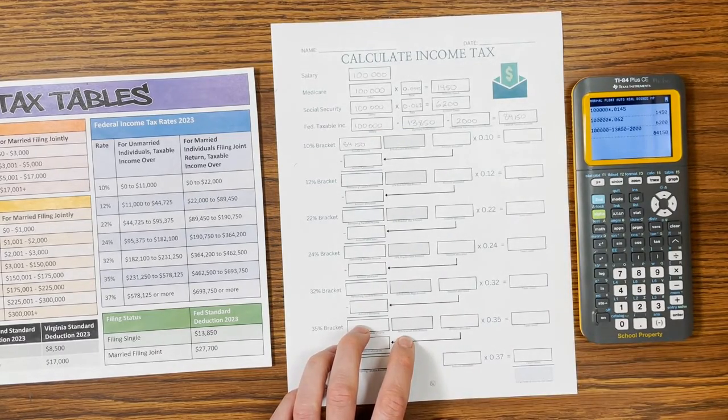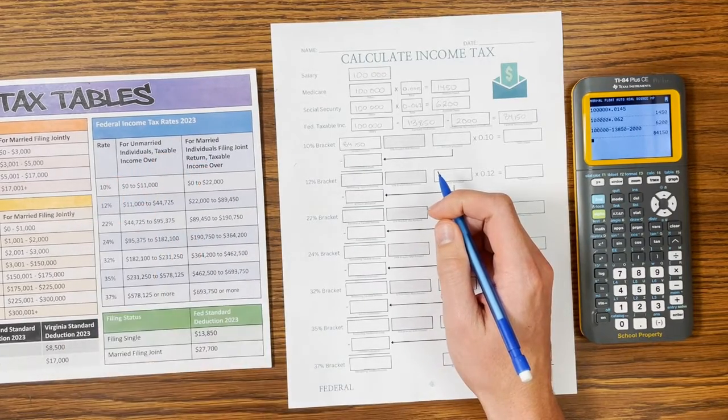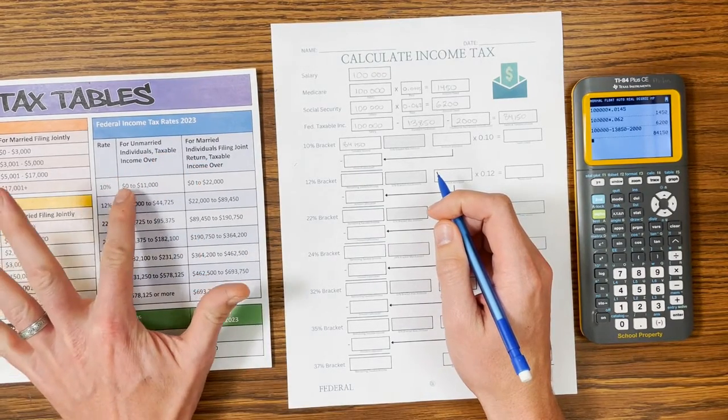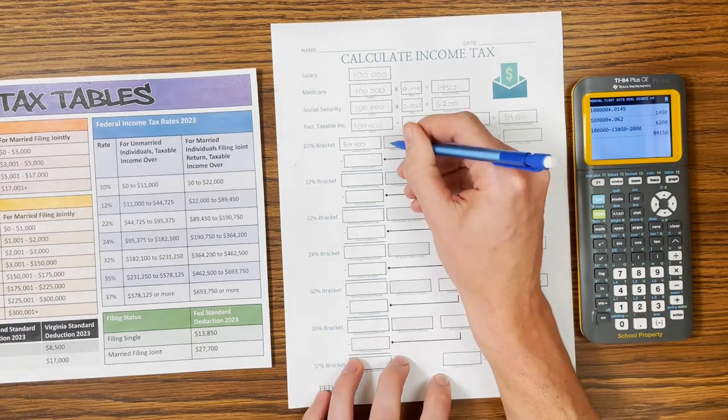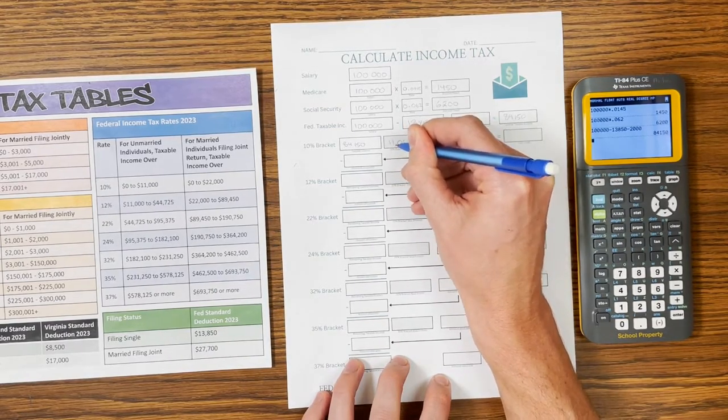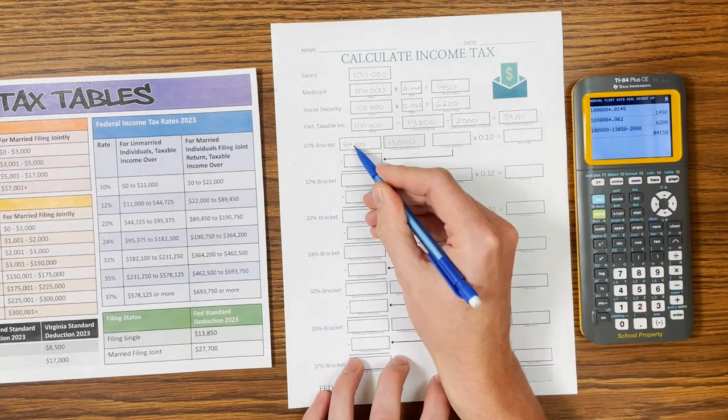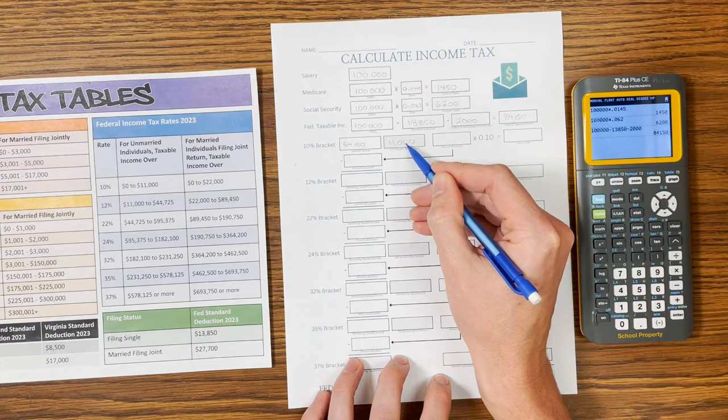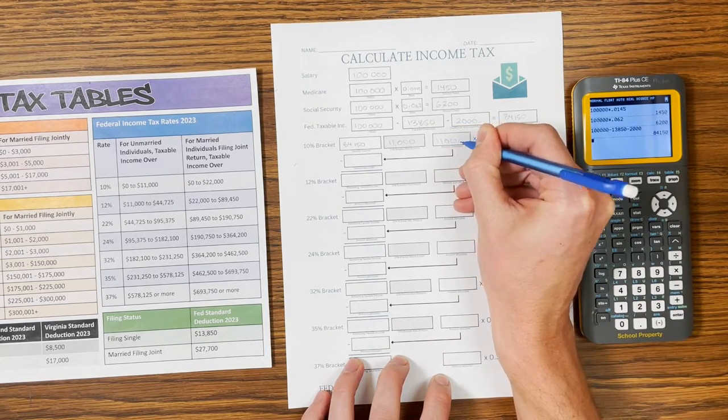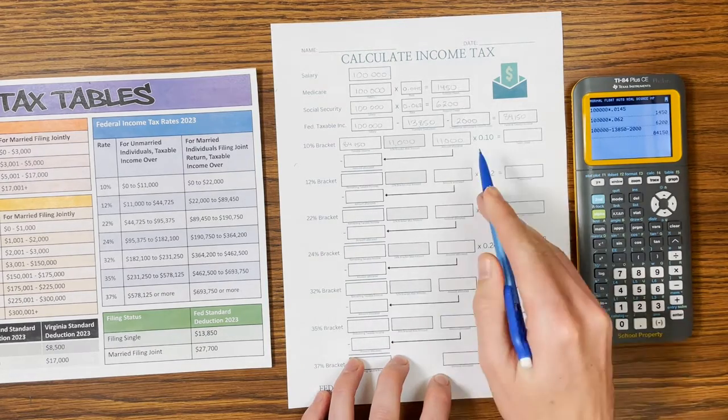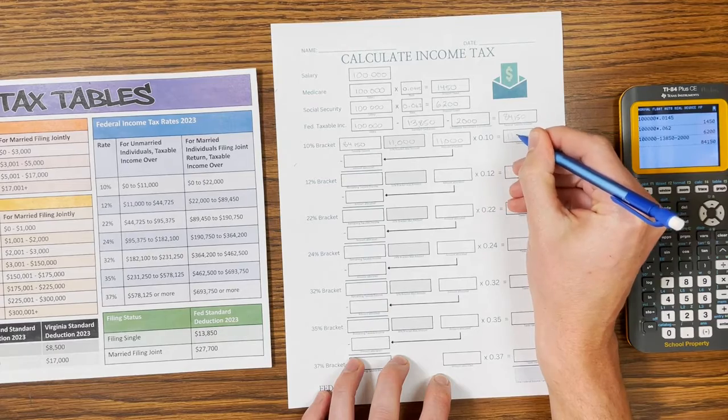We have a 10% bracket amount, and for this one we look at how much the 10% bracket can hold. For the 10% bracket, it holds from zero to $11,000. So that means your first $11,000 would go into this bracket. My $84,150 is greater than that, so I'm going to fill this one up completely. The full $11,000 is going to go into this bracket, and $11,000 times 10% is $1,100.